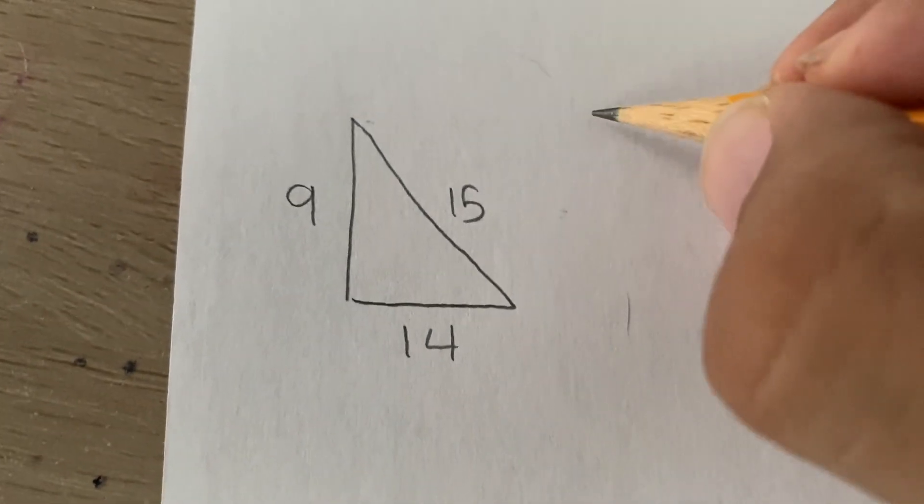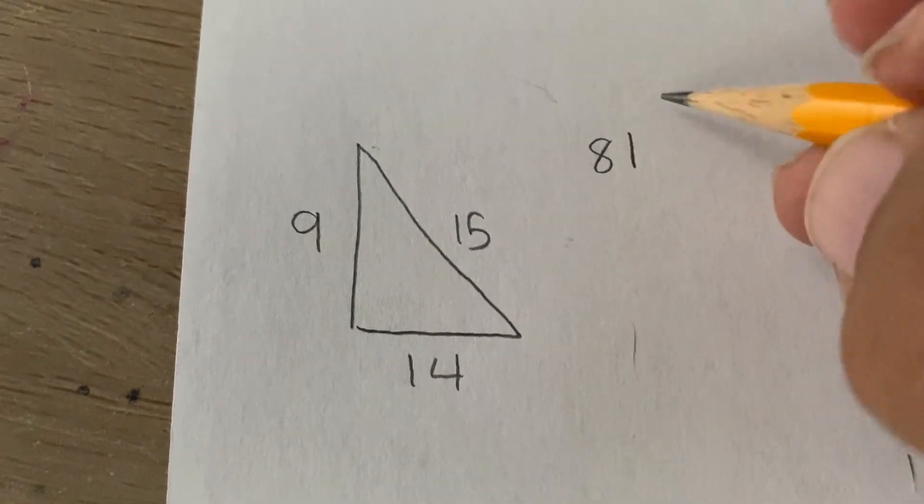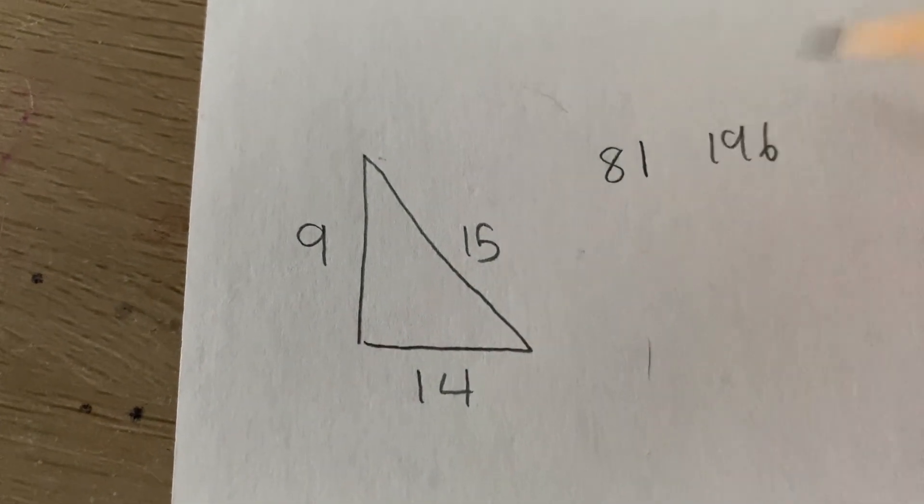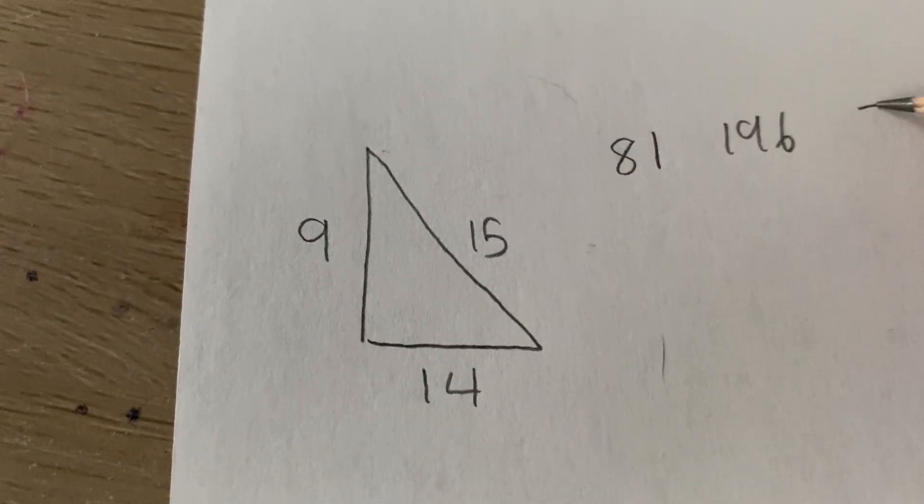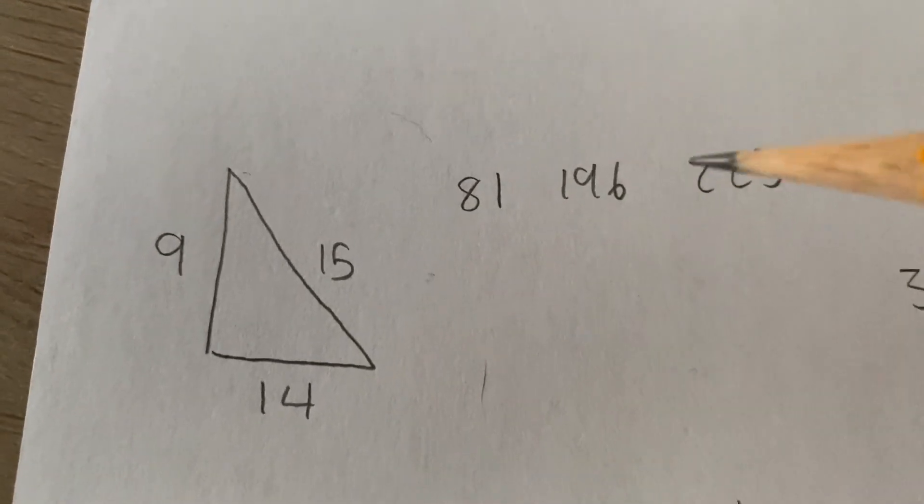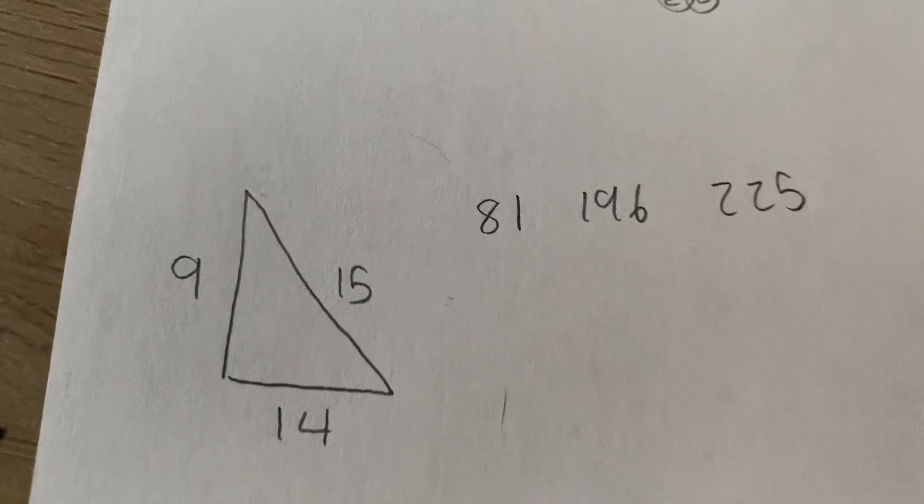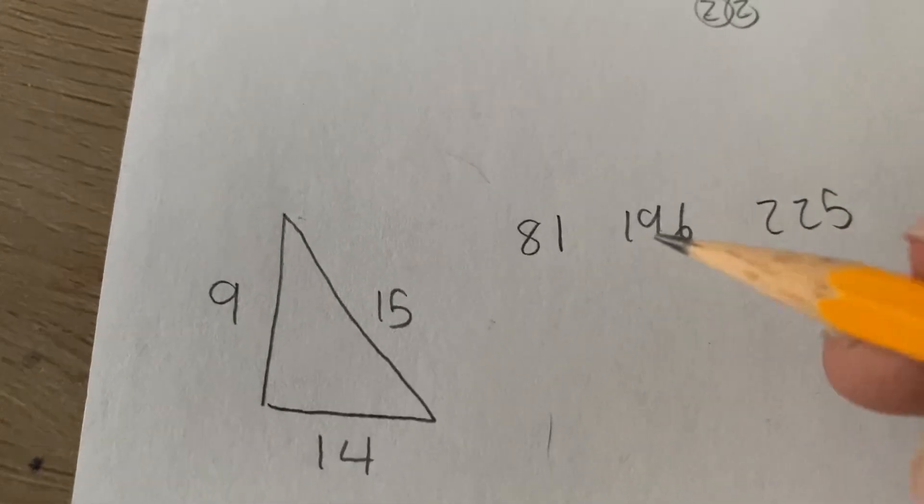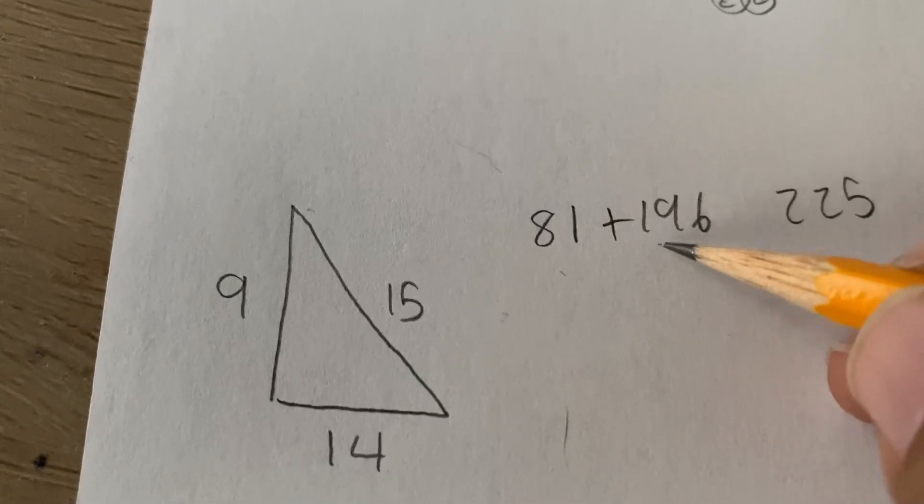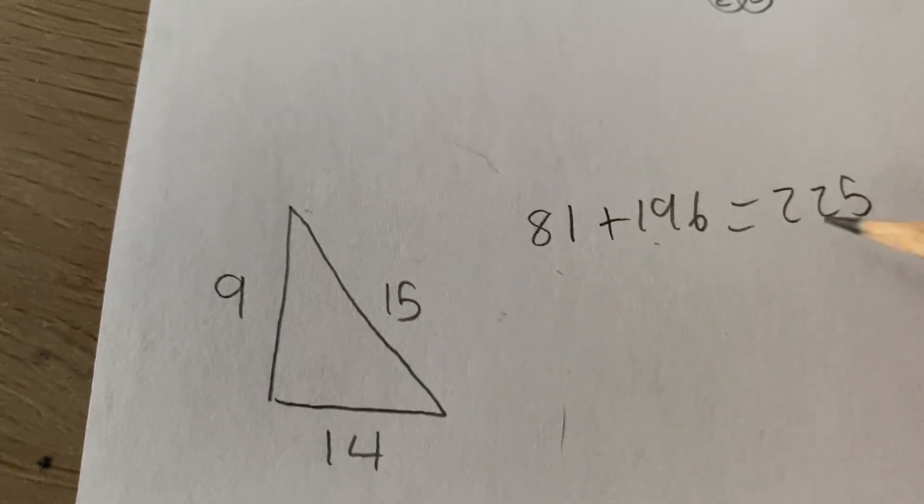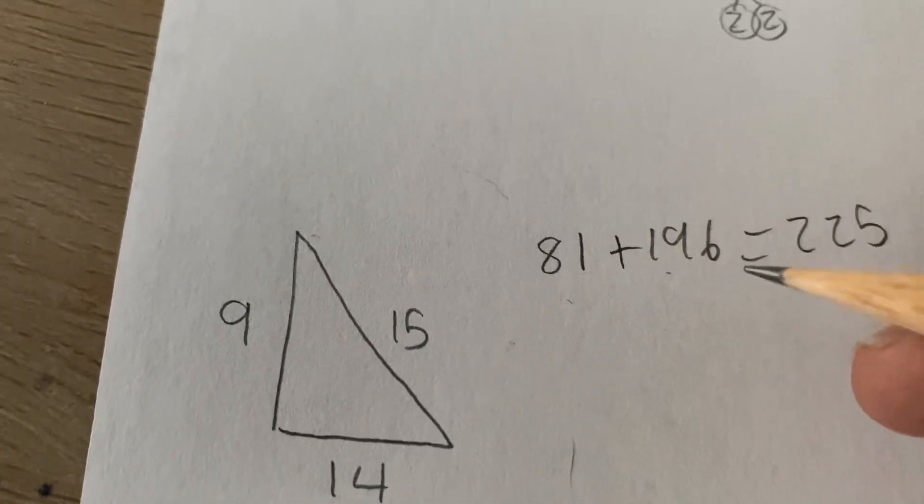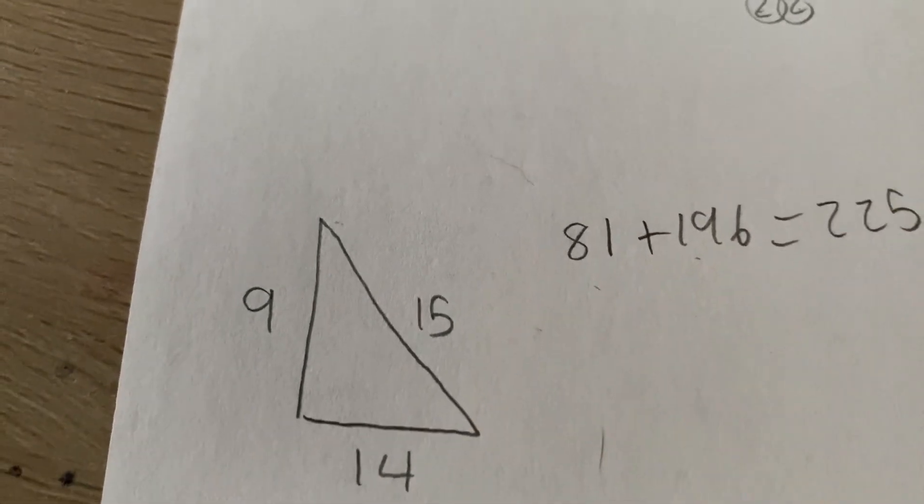So, I'm going to square all the sides. I have 81 is the square of 9. 196 is the square of 14. And 225 is the square of 15. So, let's check. So, do these two add up to the third side, the largest side? This is going to be way too big. So, this is a no. So, is this the right triangle? No.